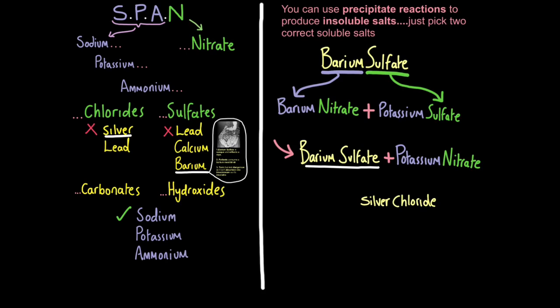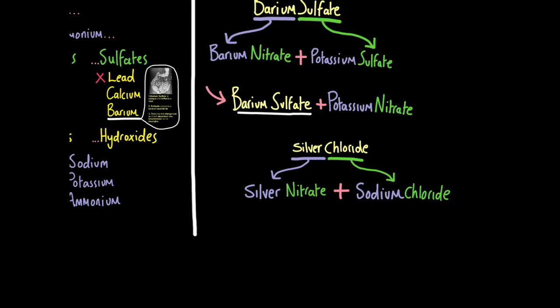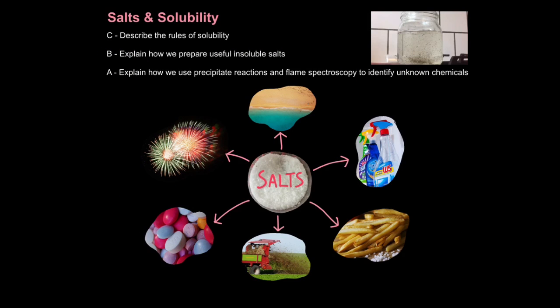Have a go yourself, what would you have to react together to make silver chloride? Pause and see if you can figure it out by using the solubility rules. Once again, silver and chloride, the first compound must contain silver, the second one must contain chloride, they must both be soluble. So let's just stick a nitrate on to the end of silver, that's now soluble and let's put sodium in the front, it could have been potassium, it could have been ammonium but I'm choosing sodium and that makes this compound soluble. So when they react together they swap dance partners so I get silver chloride over here and sodium nitrate over here, remember the metal always comes first then the non-metal. That is how we describe the rules of solubility.